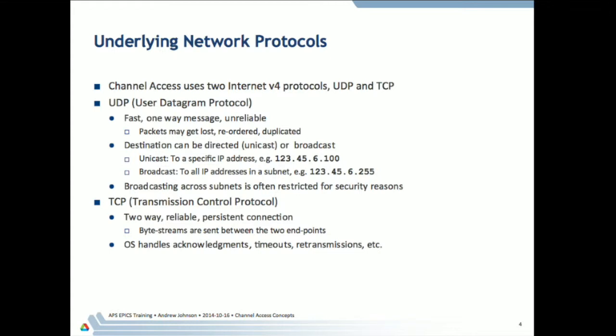Channel access actually makes use of two IP protocols: UDP and TCP. They have different characteristics and get used appropriate to those characteristics. UDP is the user datagram protocol. It basically allows you to do fast one-way messaging, but it's unreliable — packets sent over UDP may get lost, may get reordered. If I send out two packets they may arrive at the other end in the wrong order, or may get duplicated.